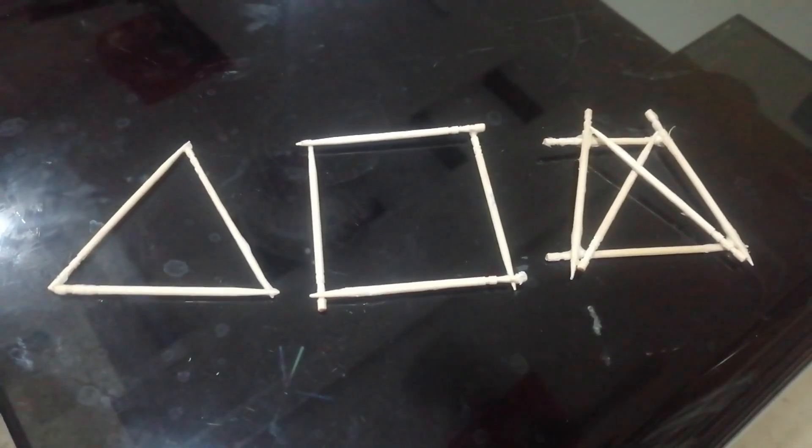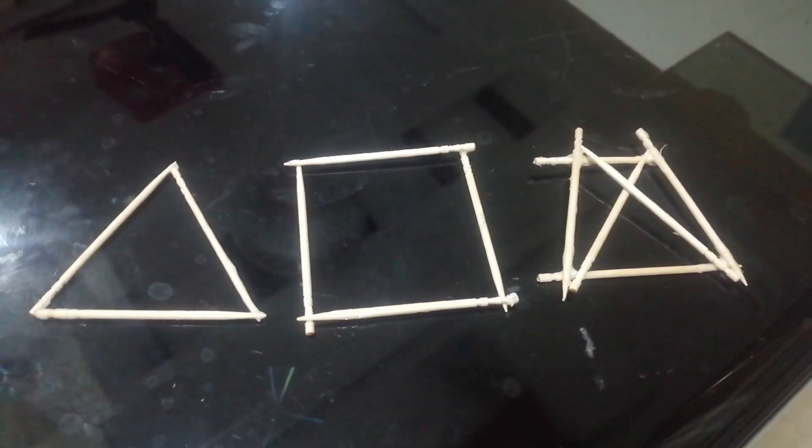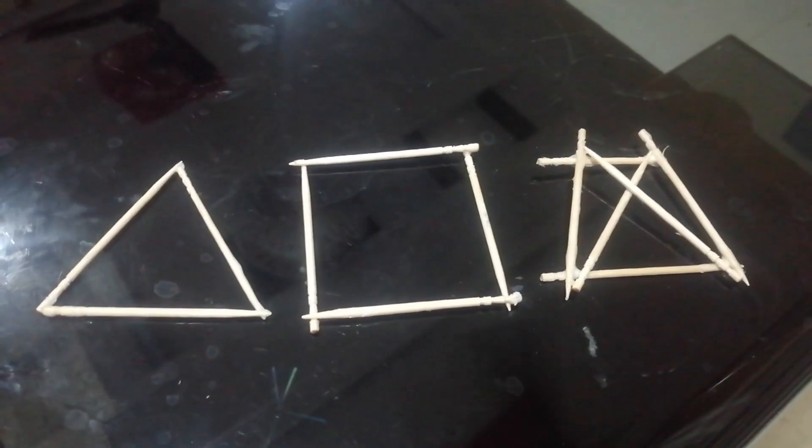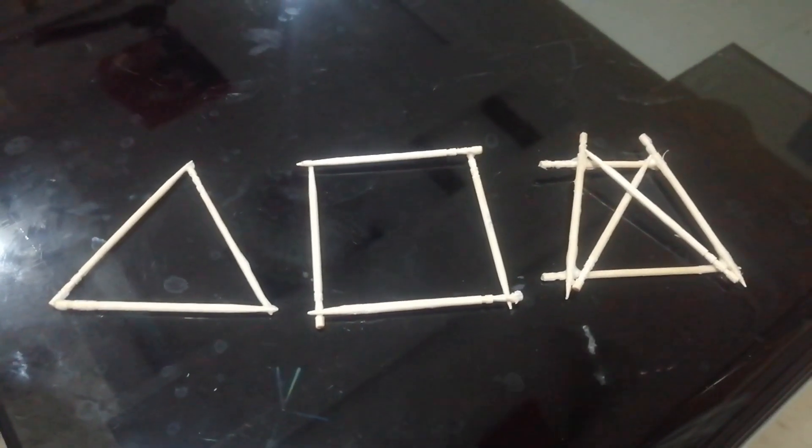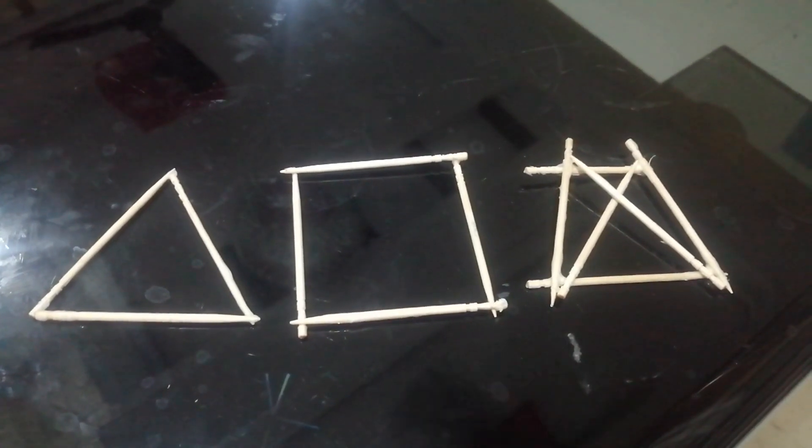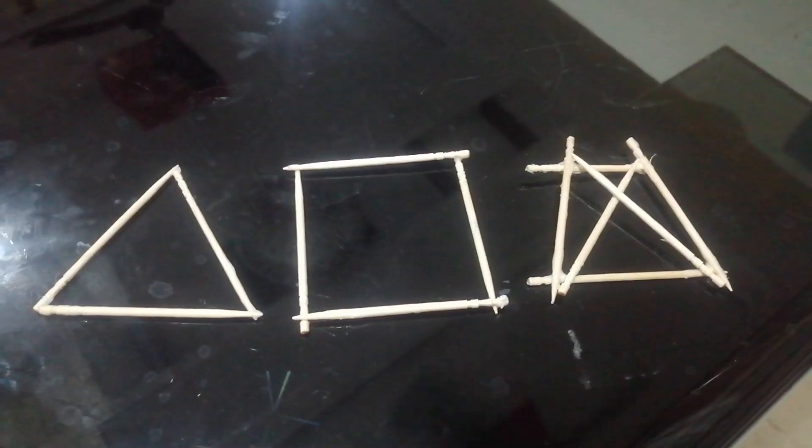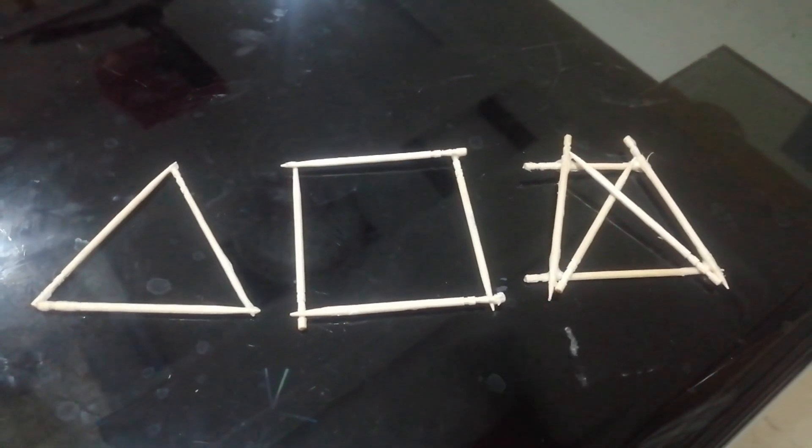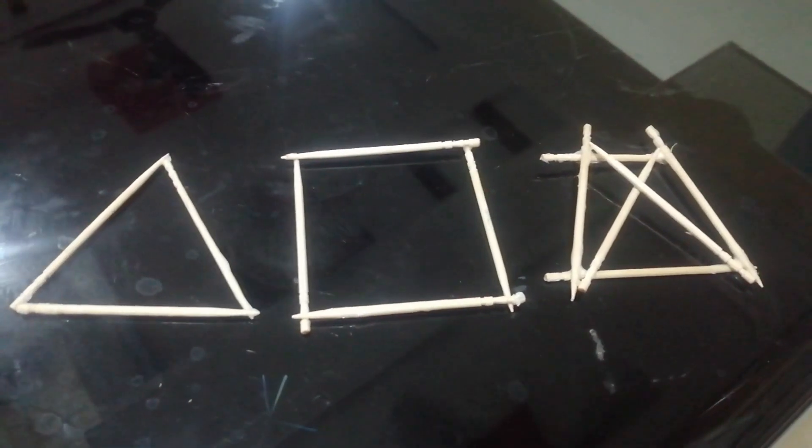A frame is said to be perfect if it can resist load without any displacements or deformations. Mathematically, it is M equals 2J minus R, where M is number of members, J is number of joints, R is equilibrium equations, that is 3. For a perfect frame, the condition M equals 2J minus 3 must be satisfied.